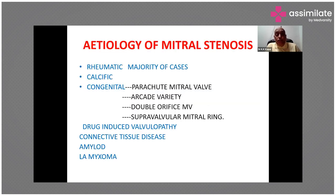Among the etiologies, for congenital mitral stenosis, the most common cause is the parachute mitral valve. We also have other types such as the arcade variety, where the subvalvular apparatus is severely deranged, as well as double orifice mitral valve and supravalvular mitral ring, which are less common etiologies.